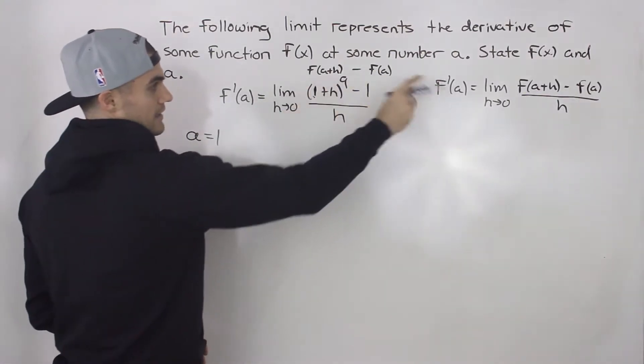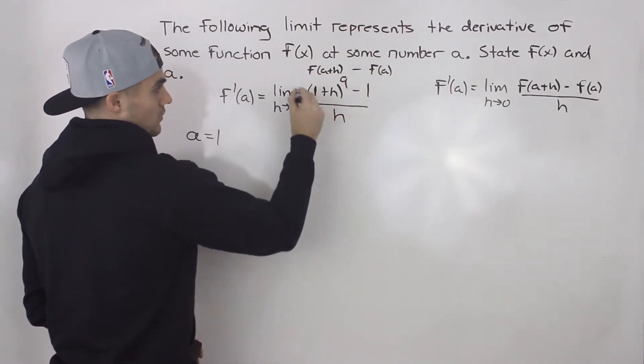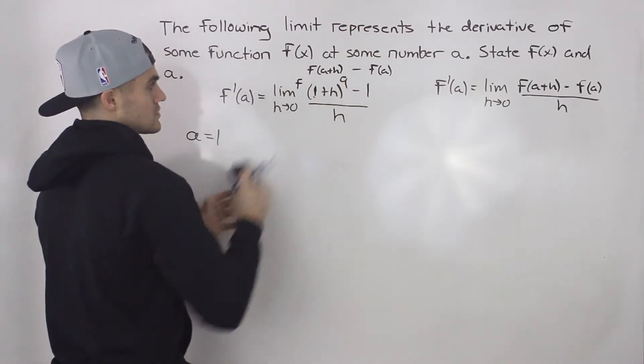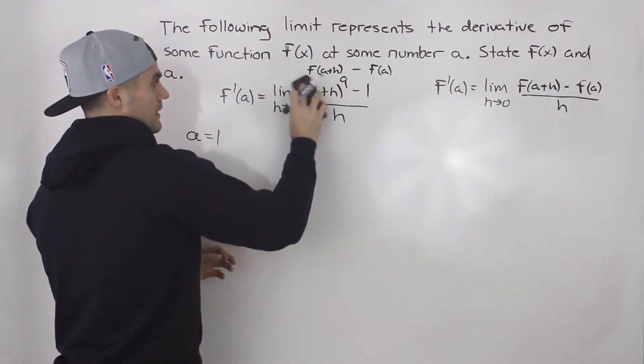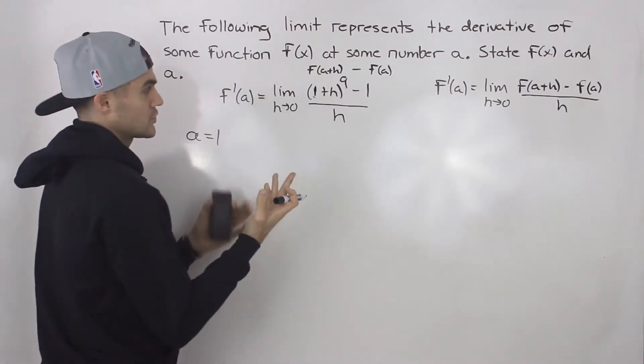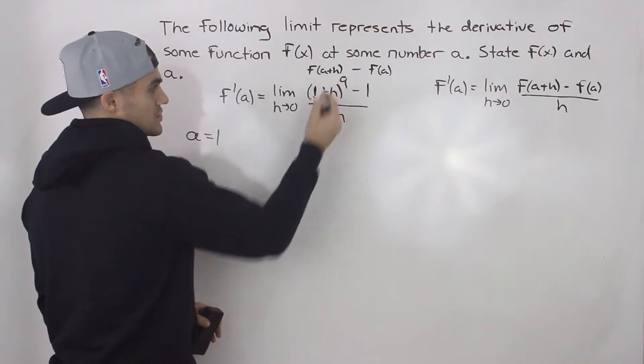Because notice that in the general format it's f(a+h). Notice there's no f here. So it's already in the format of the specific function we're working with. And we've got (1+h)^9.